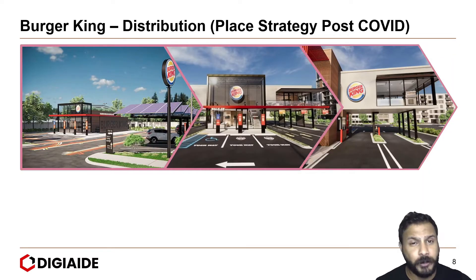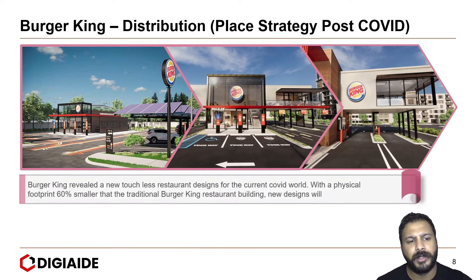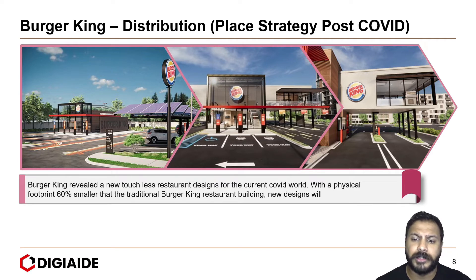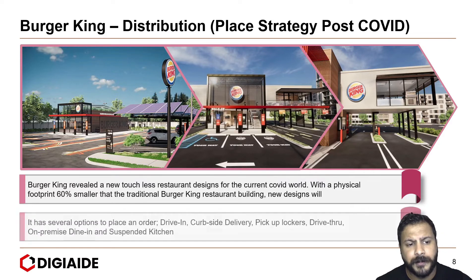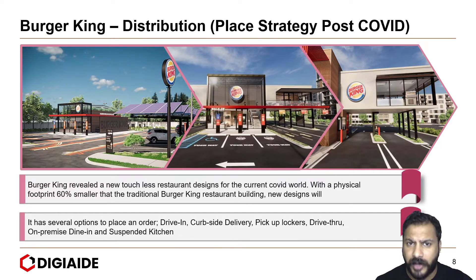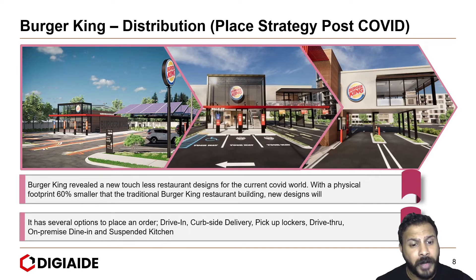Moving on to their distribution strategy during COVID and post-COVID: Burger King revealed a new touchless restaurant design for the current COVID world. With a physical footprint 60% smaller than the traditional Burger King restaurant, the new designs have several options to place orders, such as drive-in, curbside delivery, pickup lockers, drive-thru, on-premise dine-in, and suspended kitchen.